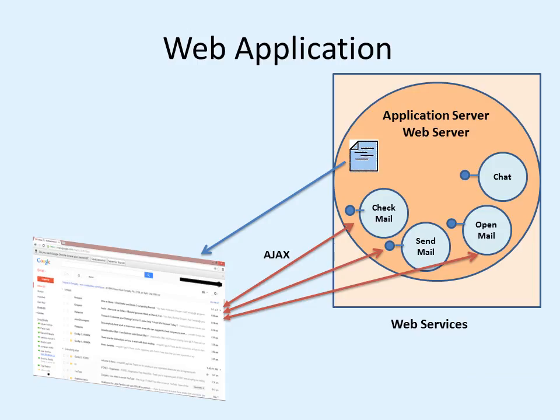But all the activities are managed by the remote functions present on the web server. For checking a mail, sending a mail, opening a mail, or chatting with friends — for every activity there may be some function running on the web server. Whenever any activity is done here, the respective function will be called, and the communication between them is via Ajax.